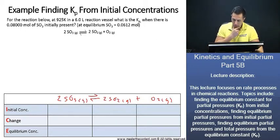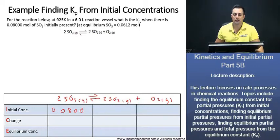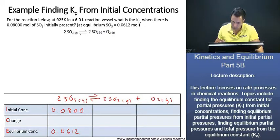So our initial concentration here, sulfur trioxide, they tell us is going to be 0.0800. We also know the amount of sulfur trioxide present at equilibrium. That's going to be 0.0612. Now, how do we find the change?